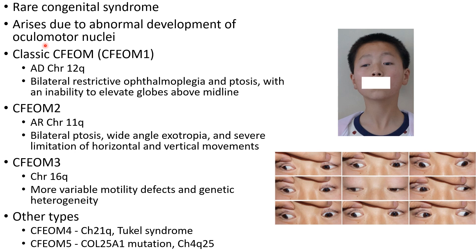Classic CFEOM is CFEOM type 1. It is an autosomal dominant condition and it affects chromosome 12q. In classic CFEOM, that is CFEOM type 1, there is bilateral restrictive ophthalmoplegia and ptosis with an inability to elevate the globes above the midline.